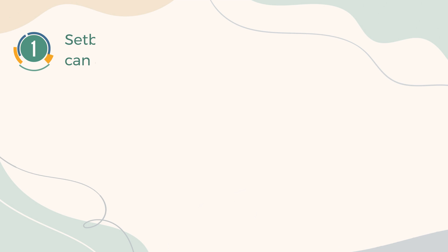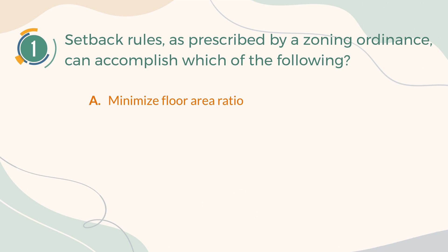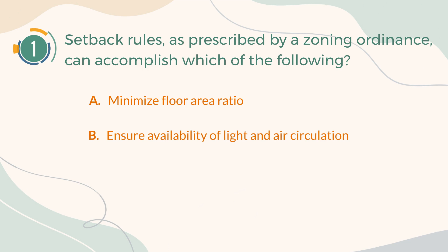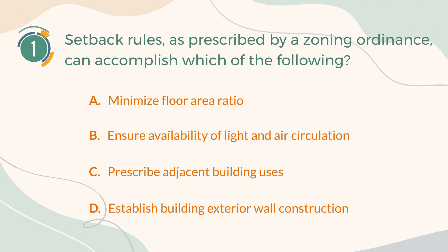Number 1. Setback rules, as prescribed by a zoning ordinance, can accomplish which of the following? A. Minimize Floor Area Ratio. B. Ensure Availability of Light and Air Circulation. C. Prescribe adjacent building uses. D. Establish building exterior wall construction.